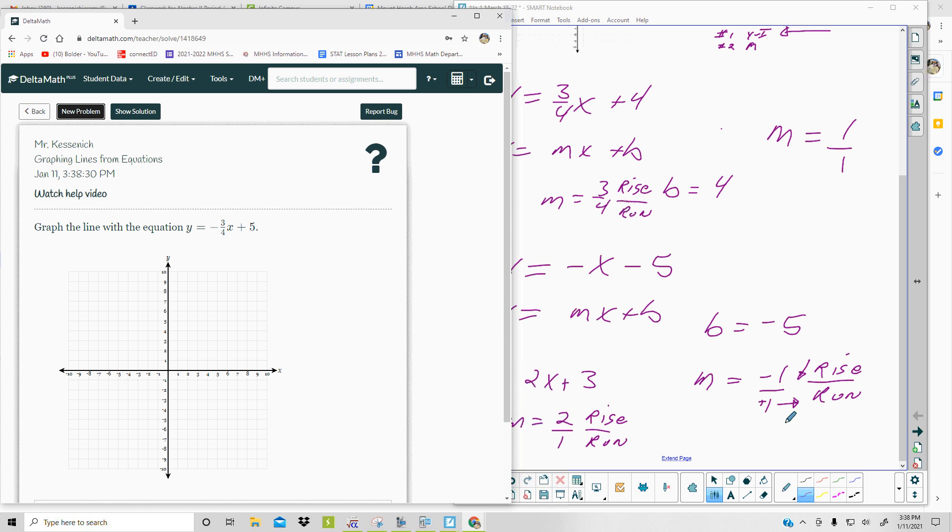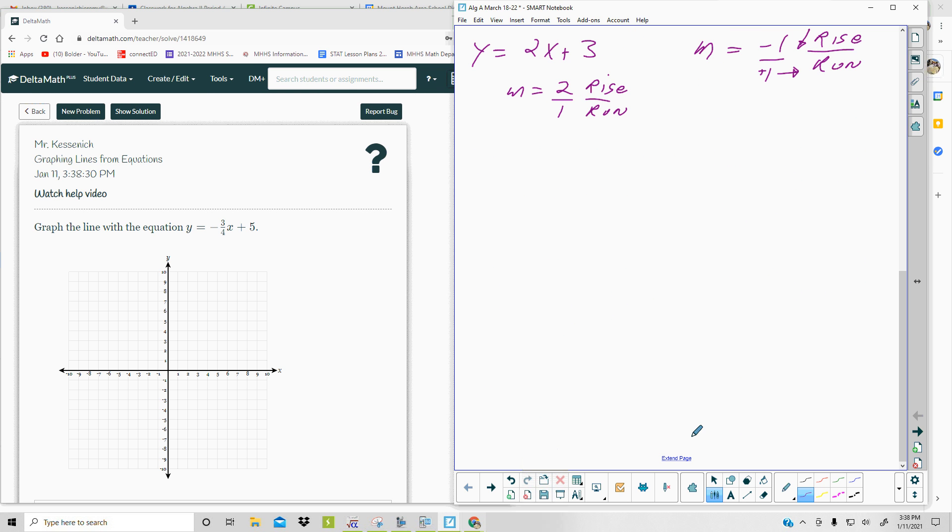Negative 3/4. Y equals negative 3/4x plus 5. So the y-intercept is 5, that's your b, so b is equal to 5. Your slope is negative 3/4. Now we need to talk about that negative. When you do it, negative 3/4 is the same as negative 3 over positive 4, or it's 3 over negative 4. You either put the negative up or you put it down. But don't put it both places because two negatives make a positive, which is positive 3/4, and it's not positive 3/4. It's negative 3/4.